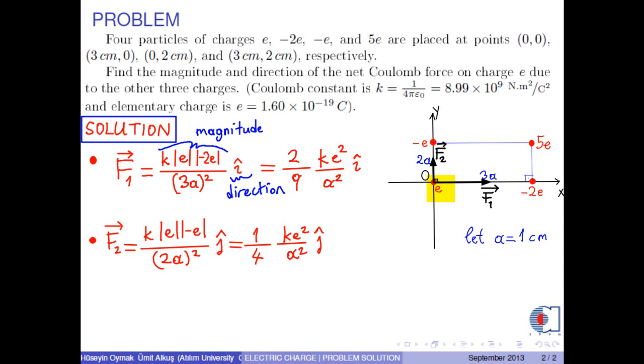Finally, the Coulomb force on charge E due to 5E is a repulsive force. However, before finding this force, let us calculate the distance between E and 5E. It is calculated by the Pythagorean theorem in the right triangle as square root of 2A squared plus 3A squared, which is equal to square root of 13A.